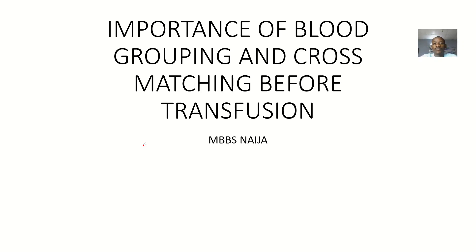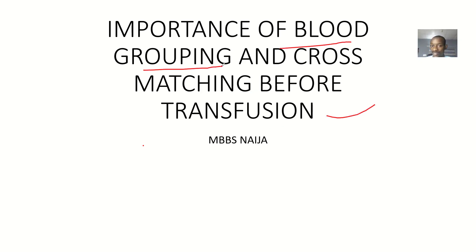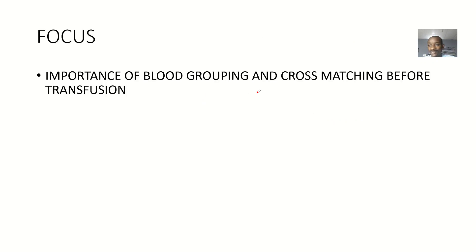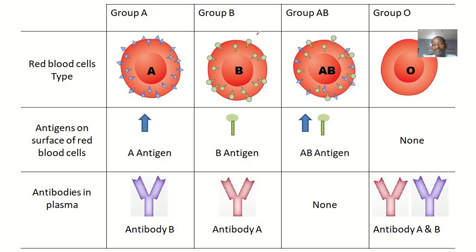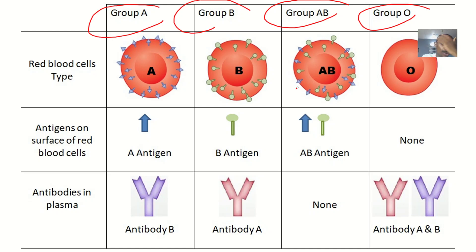Let's quickly talk about the importance of blood grouping and cross-matching before transfusion. We are not here to talk about all those methods because those are things we learned during our physiology years. Here, we are just trying to talk about what the importance is. If a patient needs blood transfusion and they tell you that you need to do blood grouping and cross-matching, you are basically doing this to know if a blood is blood group A, blood group B, blood group AB, or blood group O.